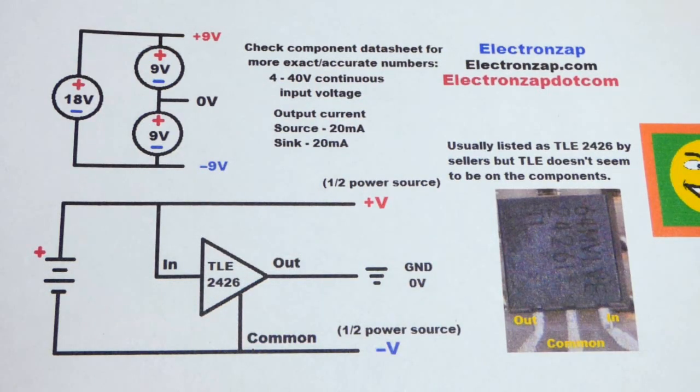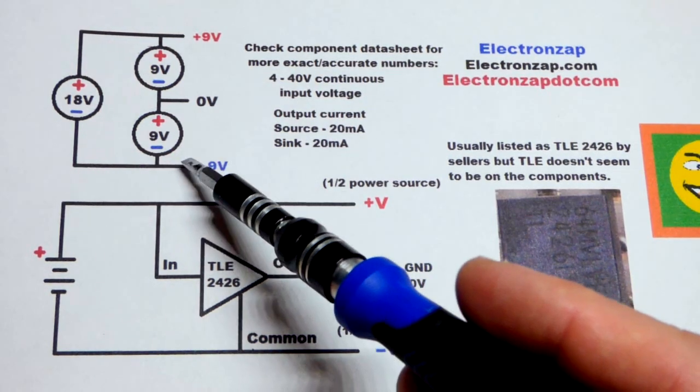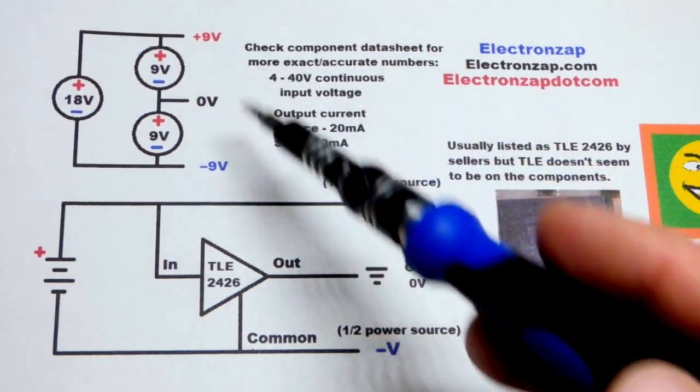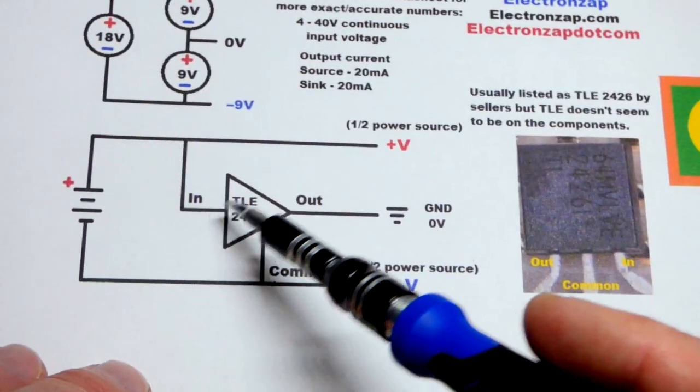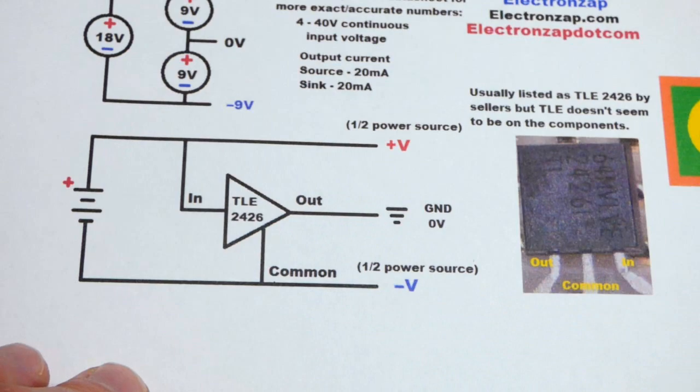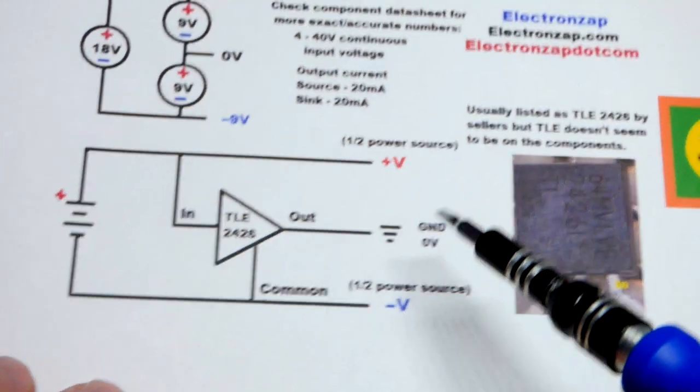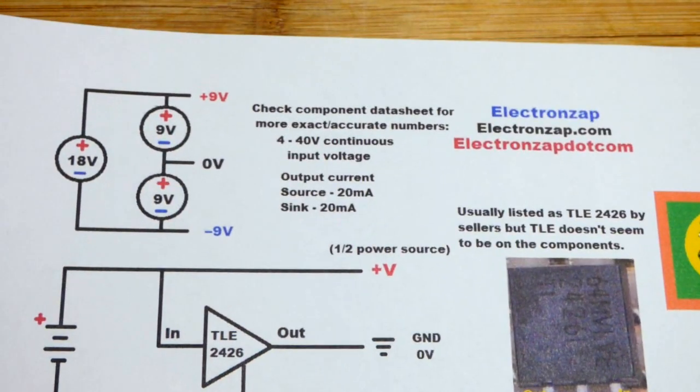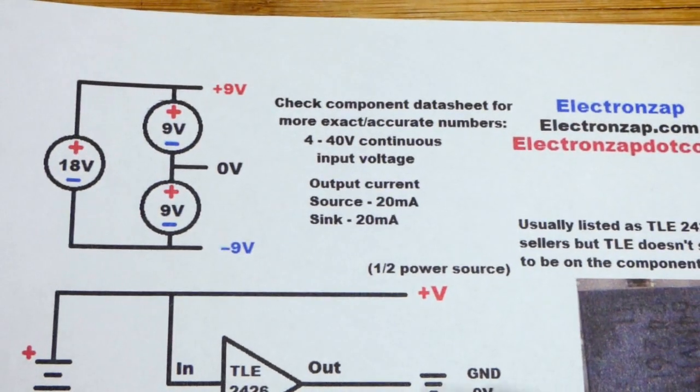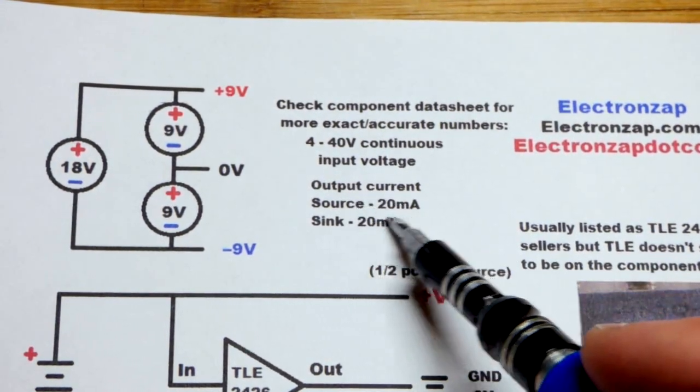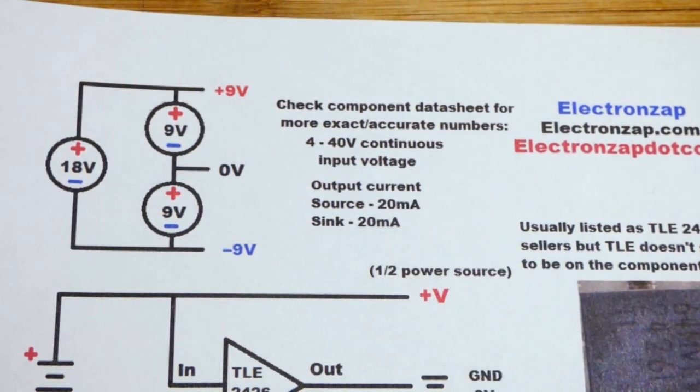There are a lot of op-amps intended for a dual or split supply. So we're going to split it, and the main focus is this little integrated circuit right here that splits it for you. It has some limitations where we have an output current of either sinking or sourcing about 20 milliamps.